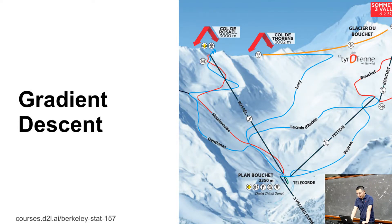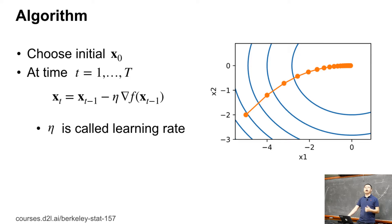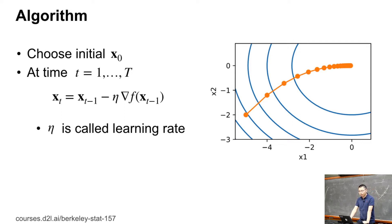Let's review gradient descent. We pick an initial point x0, which is the randomly initialized parameter in deep learning. At each time step t from 1 to T, we compute the gradient of f at the previous point x_{t-1}, and subtract the learning rate times that gradient to get the current x_t. That is the gradient descent update.